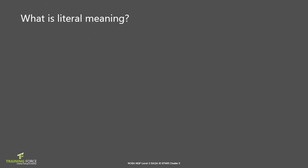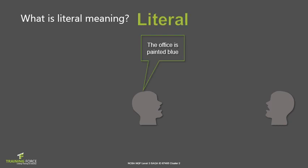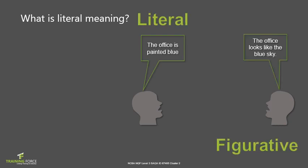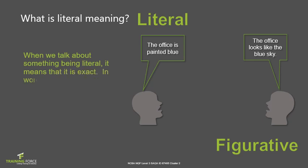In this topic, we will learn how to use a range of reading and viewing strategies to understand literal meanings of specific texts. For example, if I said the office is painted blue, it is exactly that. If I said the office looks like the blue sky, it is a figurative meaning because I am comparing it to something else. So, what is literal meaning? When we talk about something being literal, it means that it is exact — in context, it means that you mean exactly what you say.